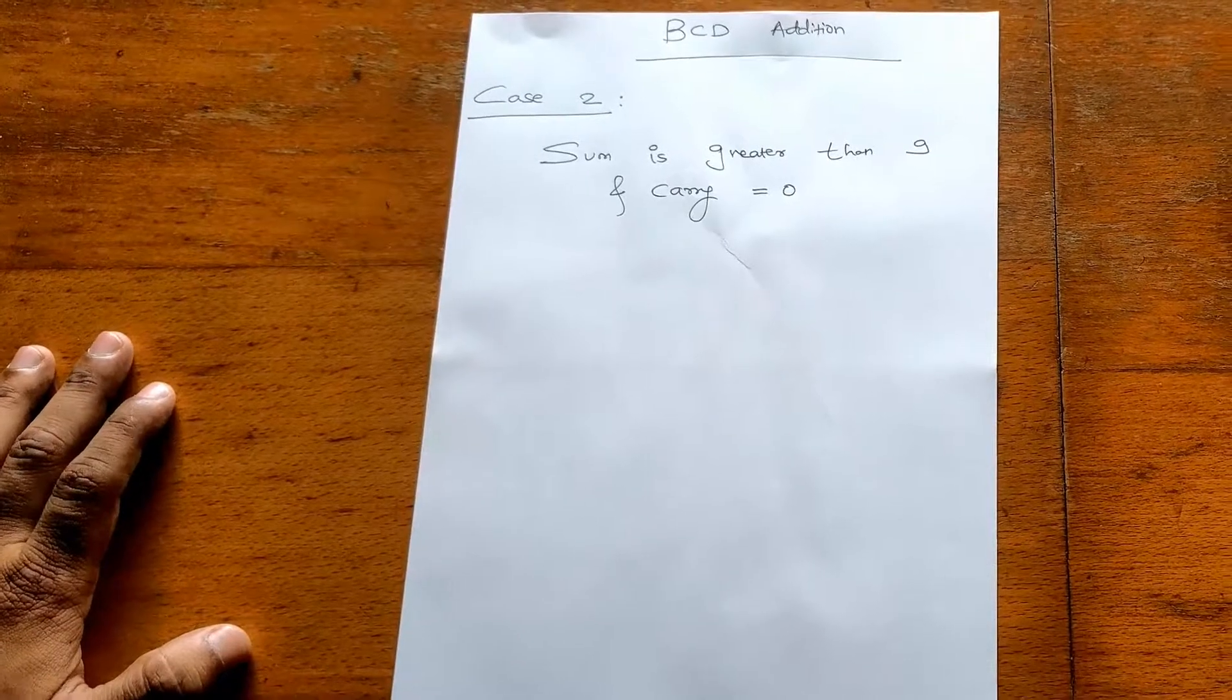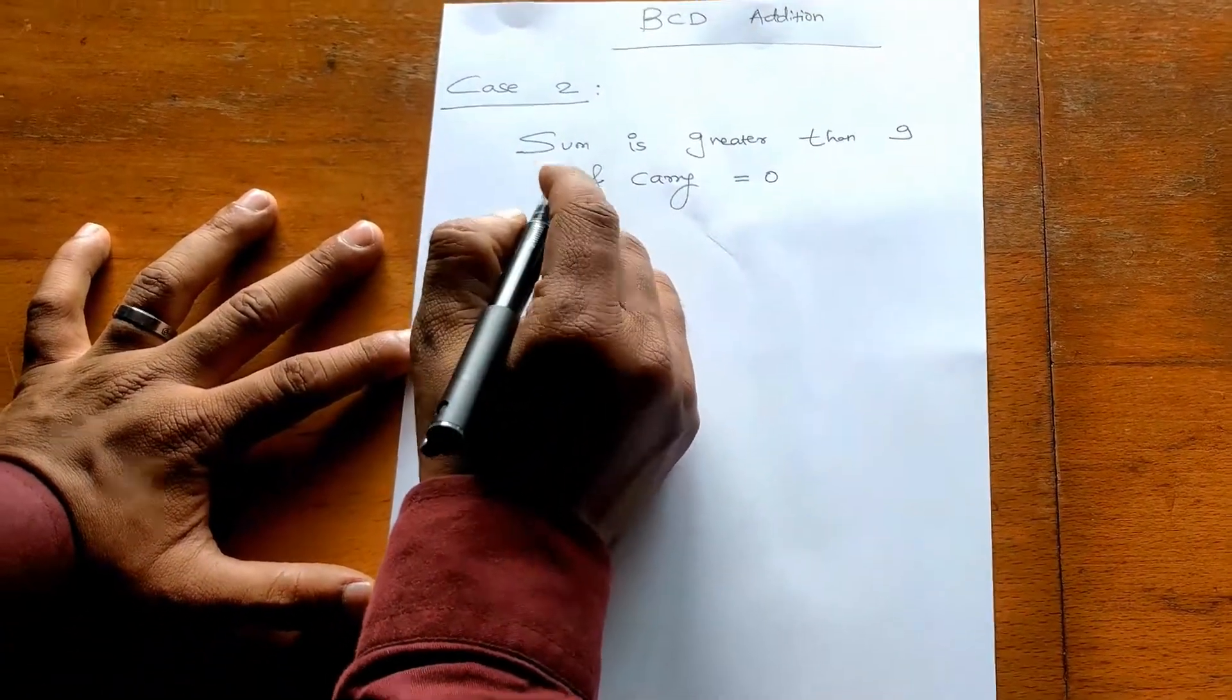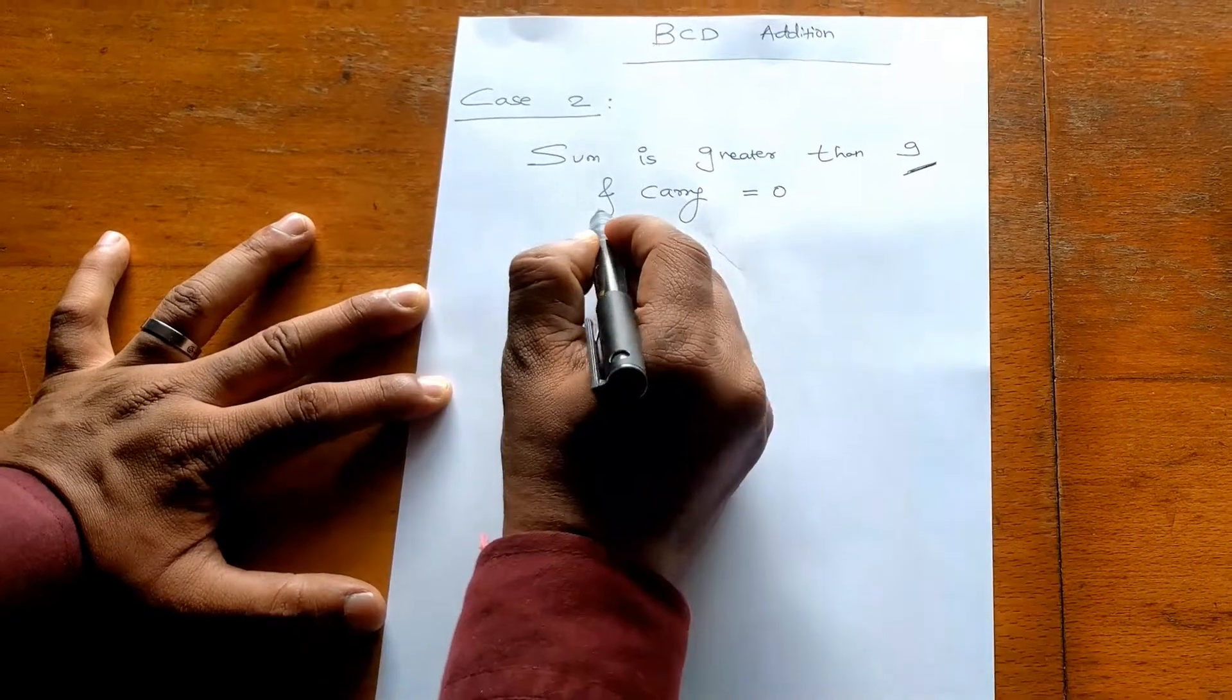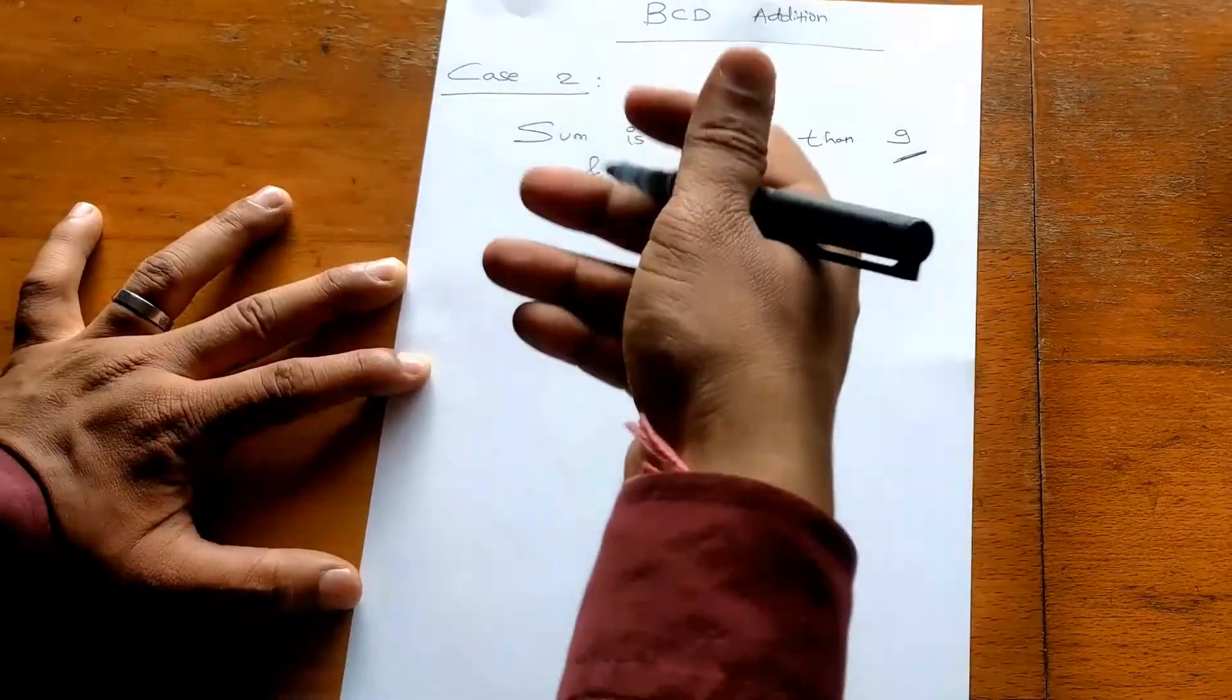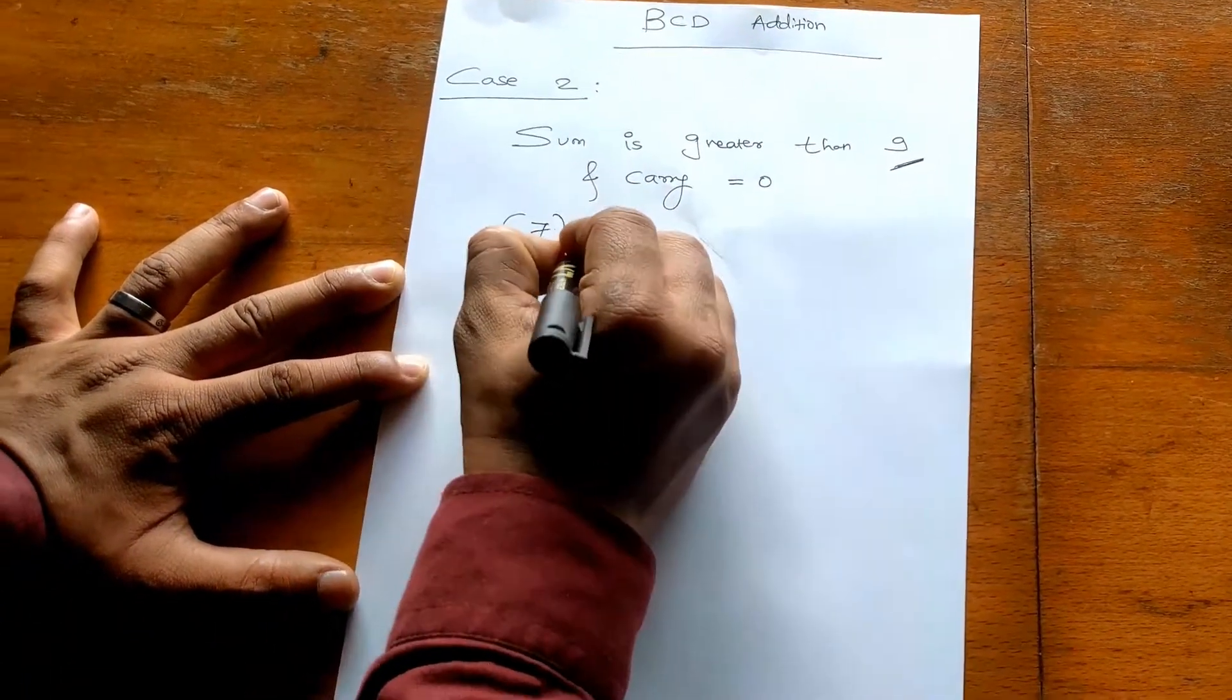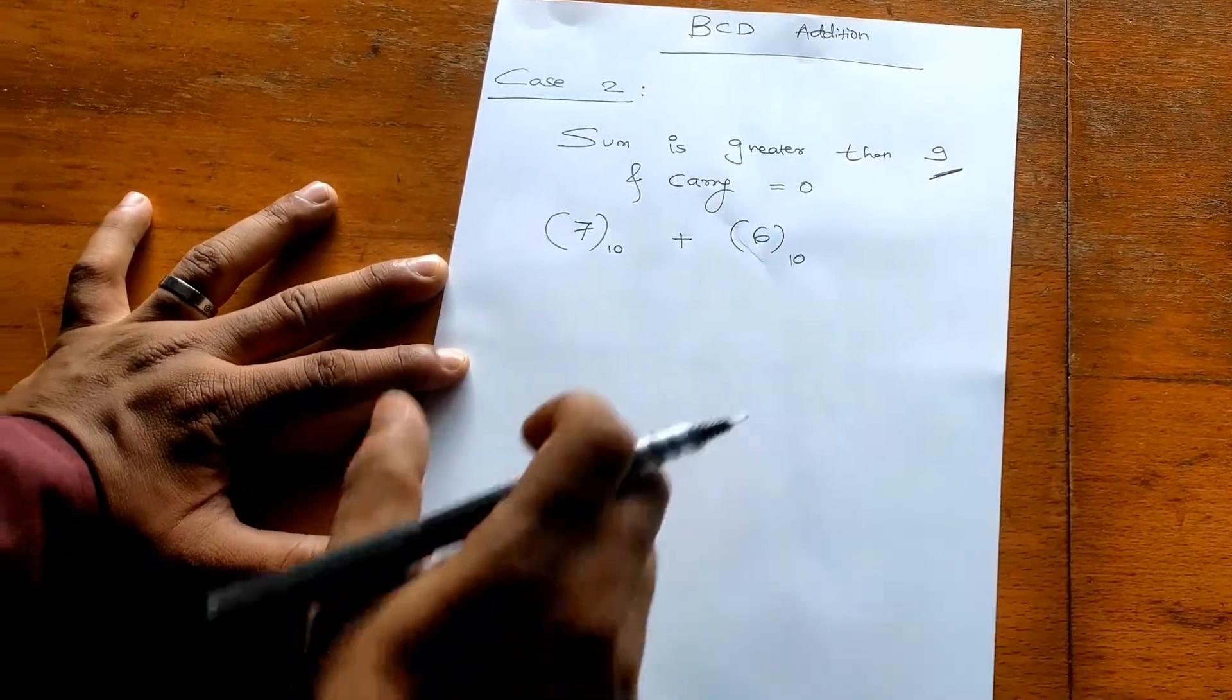Hello friends, BCD addition Case 2. First thing is that in Case 2, if your answer or sum is greater than 9 and carry is equal to 0, then what you have to do we will see today. We'll take one simple example: 7 in decimal plus 6 in decimal, and you have to add these two using BCD.